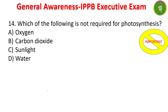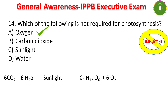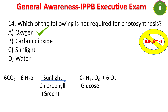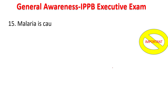Next question: which of the following is not required for photosynthesis — oxygen, carbon dioxide, sunlight, or water? The answer is oxygen. Oxygen is not required; it is actually a byproduct of photosynthesis. The equation is: CO2 + H2O, in the presence of sunlight and chlorophyll, produces glucose and oxygen. So carbon dioxide, water, and sunlight are required.